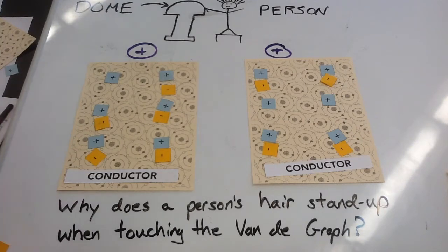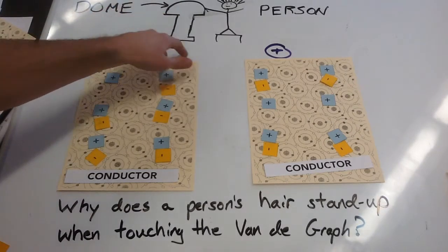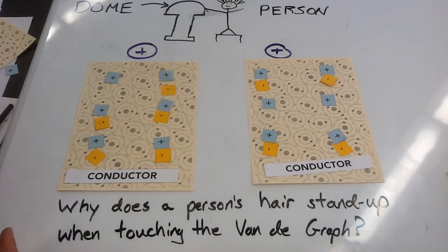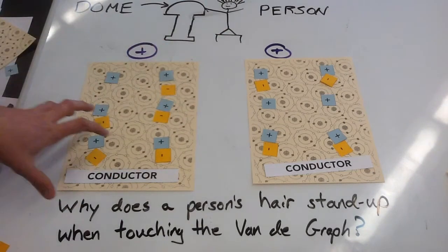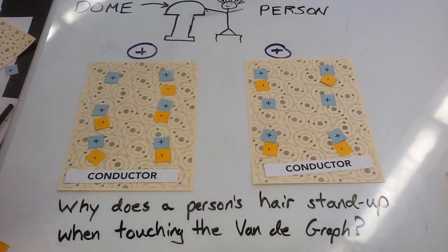And whenever we're charging by conduction, by contact, you're always going to have your objects end at the same charge. And again, this charge is going to be evenly distributed because it's a conductor.